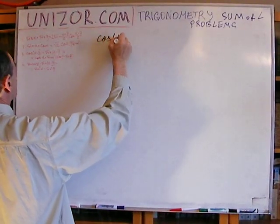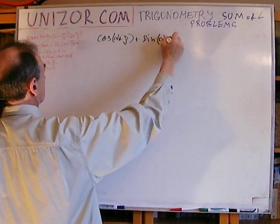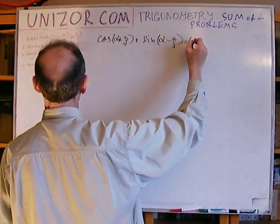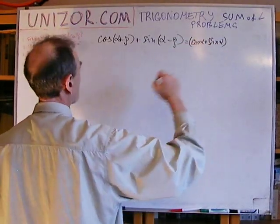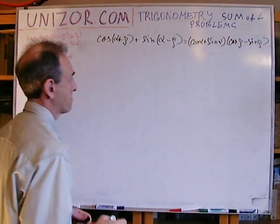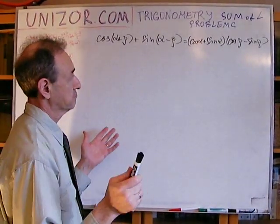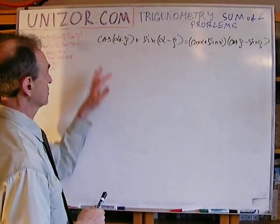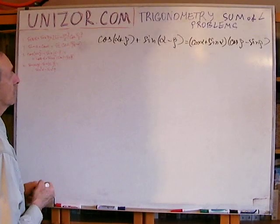Next: cosine of alpha plus beta plus sine of alpha minus beta is supposed to equal cosine alpha plus sine alpha times cosine beta minus sine beta. Quite frankly, I don't see much ingenuity in this particular thing. All we have to do is just open up these two things and open up that thing and see if they're equal.